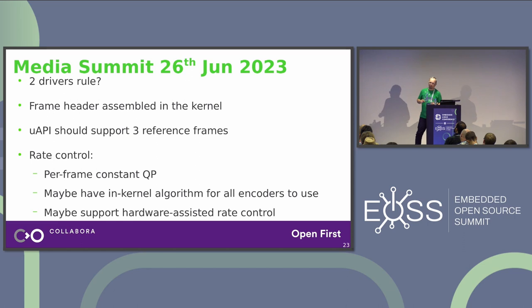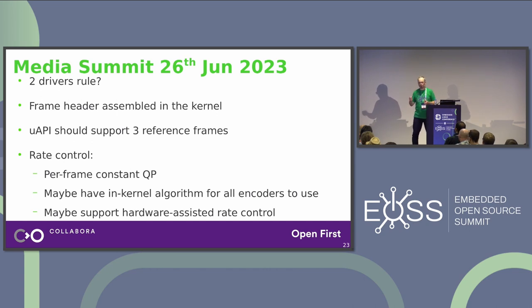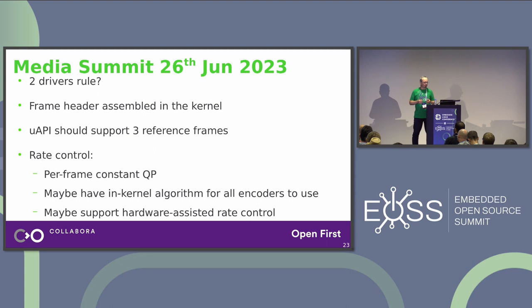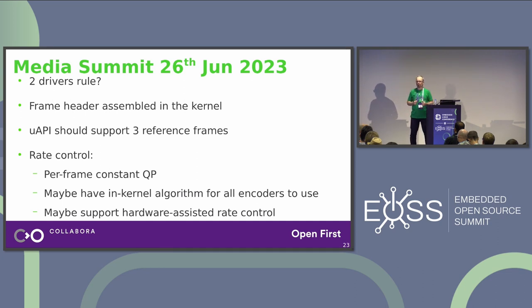These are the very latest developments from the media summit held this Monday. In the Linux kernel there is a two-drivers rule: you cannot upstream a new UAPI unless at least two drivers use that API. Since there is likely only one kind of VP8 encoding hardware, we are in trouble. The conclusion is that if we can confirm there is indeed only one kind, the two-drivers rule may become a one-driver rule. Help confirming this or proving it wrong would be greatly appreciated.